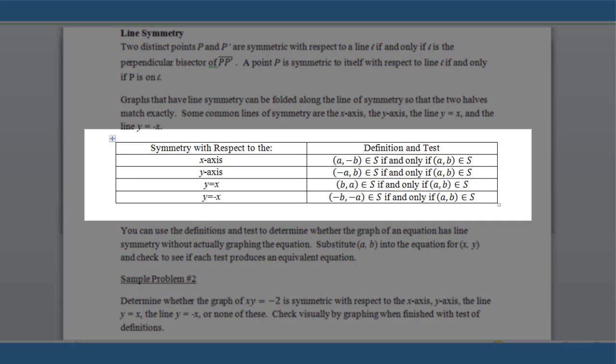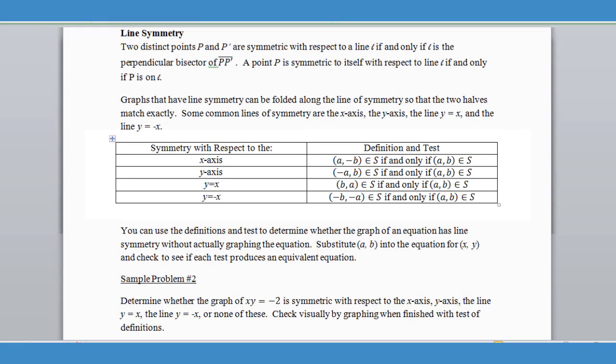Now we do have mathematical tests that we can run on any given function or equation that will help us to determine if there is line symmetry or not. With any line symmetry, it depends on what line the graph is symmetric across. And of course we have four common lines: the X axis and the Y axis, but we also have the diagonal line Y equals X and the negative sloping diagonal Y equals negative X.